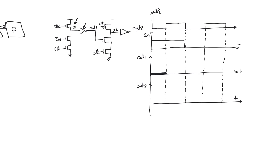Output-two is also going to be zero volts during the pre-charge phase. During the first evaluate phase, the input in-one is equal to one. This is the condition that caused us problems previously, because it is the condition during which the input of the second inverter was one and then dropped to zero, causing the second inverter to lose some of its high-impedance charge and not be able to replace it again.